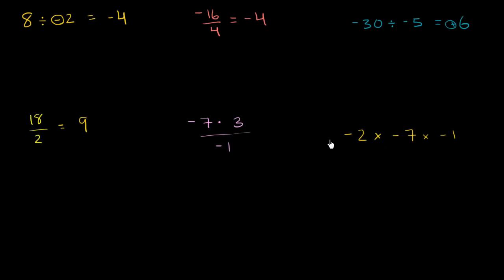Now we start doing some interesting things — here's a compound problem with multiplication and division going on. We're going to want to multiply the numerator out. If you're not familiar with the dot symbol, it's just another way of writing multiplication. In algebra the dot becomes much more common because the x gets used for other things — people don't want to confuse the times symbol with the letter x. So this just says negative 7 times 3 in the numerator.